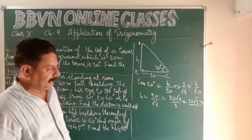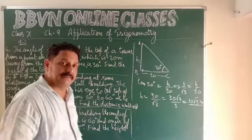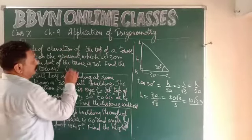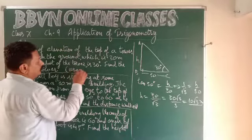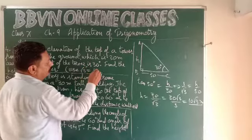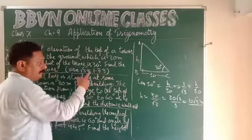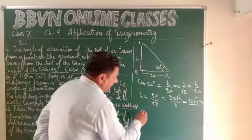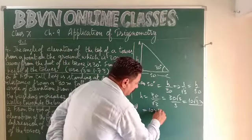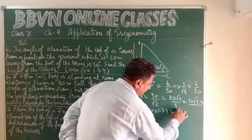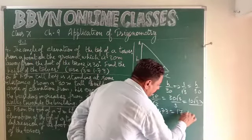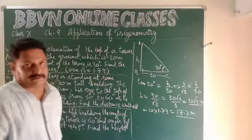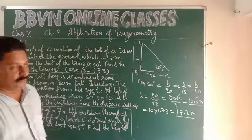The height of the tower is 10√3 meters. It may also happen that the question provides the value: use √3 = 1.73. If this is given, you have to use it, so it will be 10 × 1.73 = 17.3 meters. This is the height of the tower.